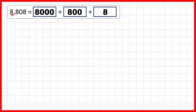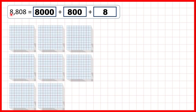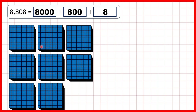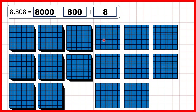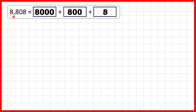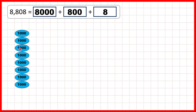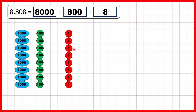Our last number was 8,808. We can show 8,000 blocks for the thousands digit, and 800 blocks for the 8 in our hundreds. We don't show any tens, and then we just need to show 8 ones — so that's 8,808. Or using place value counters, we can show 8 thousands, 8 hundreds, no tens, and 8 ones.